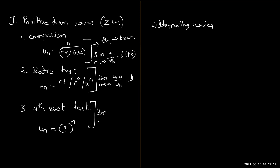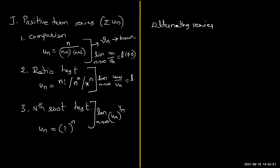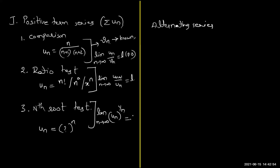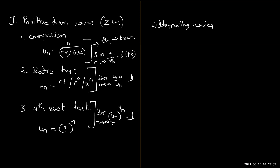Similarly, in the nth root test, we use the limit of u_n to the power of 1/n as n tends to infinity. When you have a power of n and take the nth root, n cancels out and we get a simple function. As in the ratio test: if this limit L is less than one, the series is convergent; if L is greater than one, it is divergent; and if L equals one, the test fails. Using either of these three techniques, we decide whether the given positive term series is convergent or divergent.